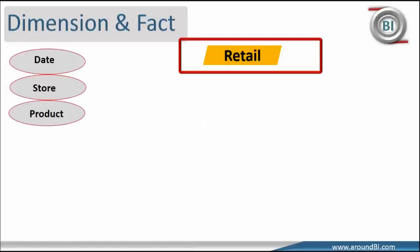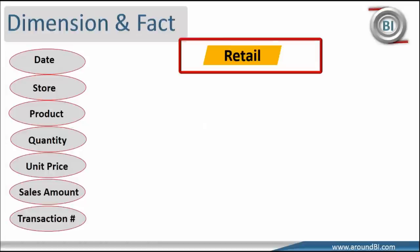store where the sale happens, product what is sold, quantity, unit price and sales amount of sold products and a transaction number or invoice number of sales.